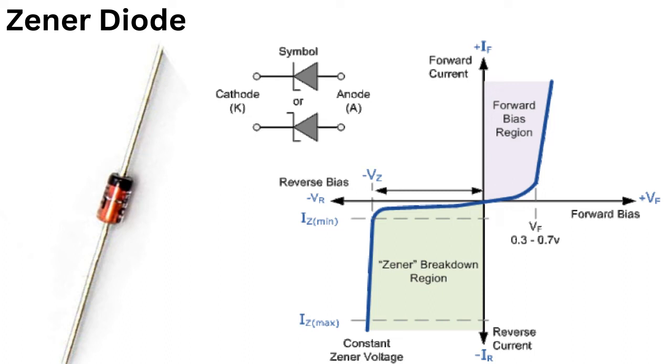The Zener voltage is the voltage at which the diode begins to operate in the Zener region and is specified in the diode's datasheet. The current flowing through the diode in the Zener region is known as the Zener current or IZ.